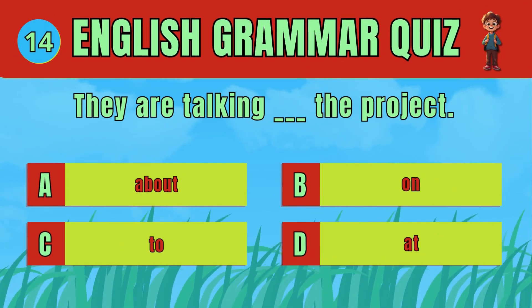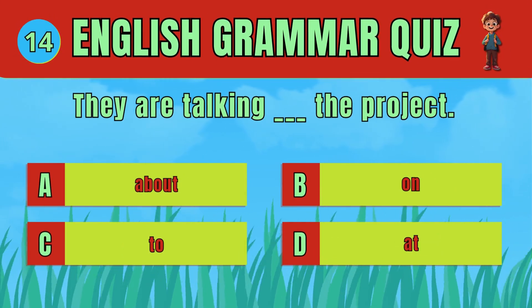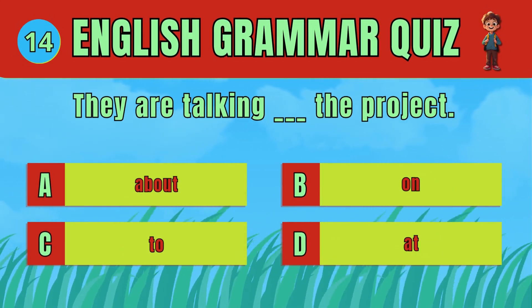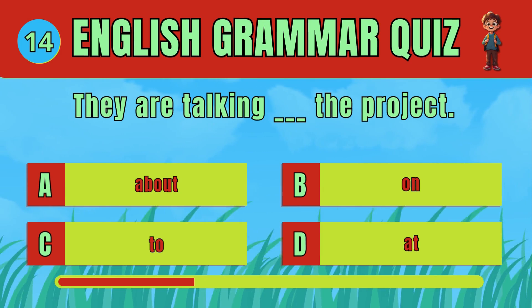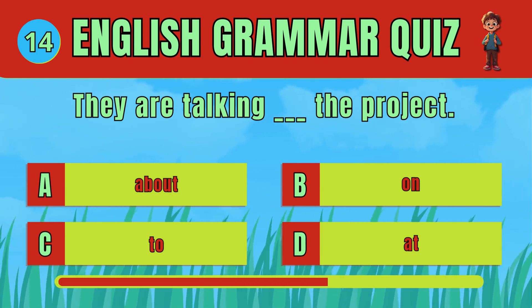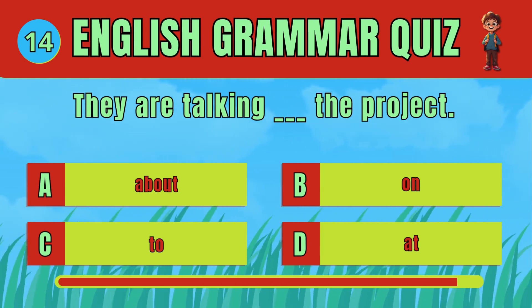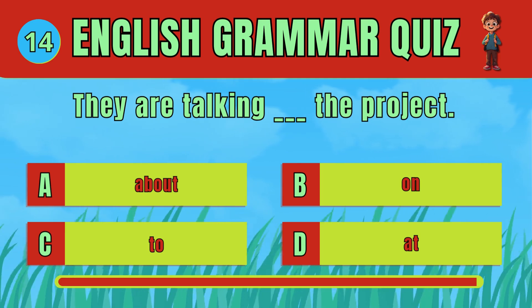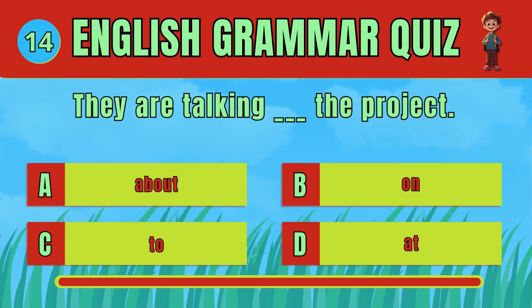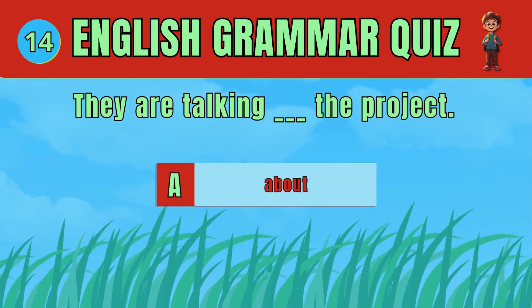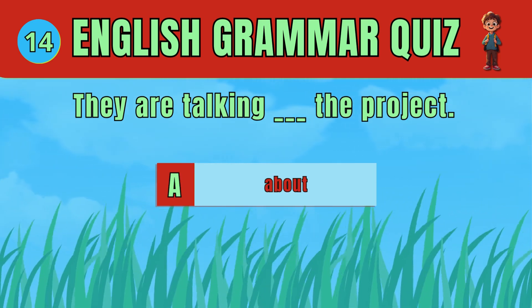Choose the correct preposition to indicate what they are talking about. The answer is: about. They are talking about the project.